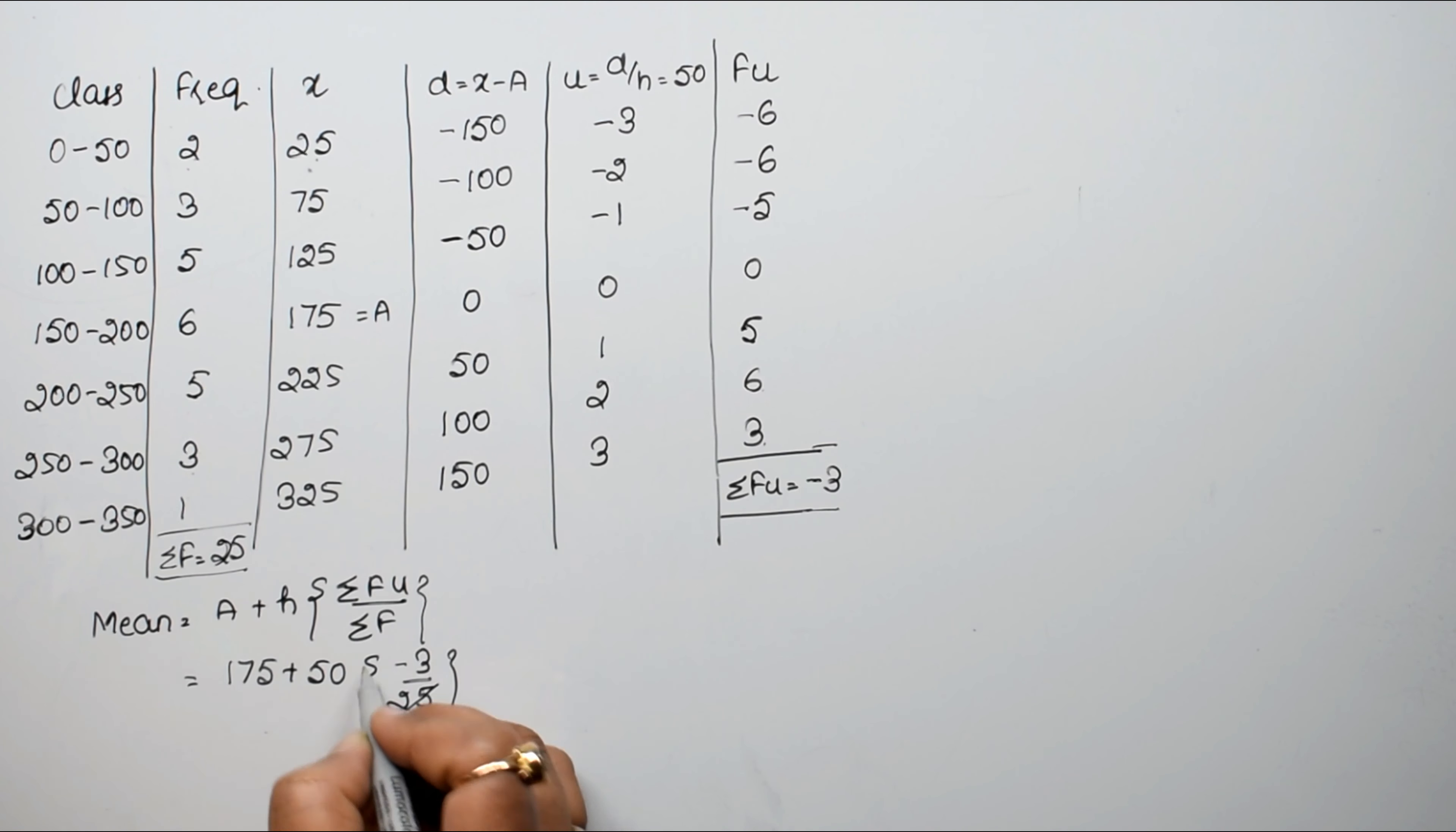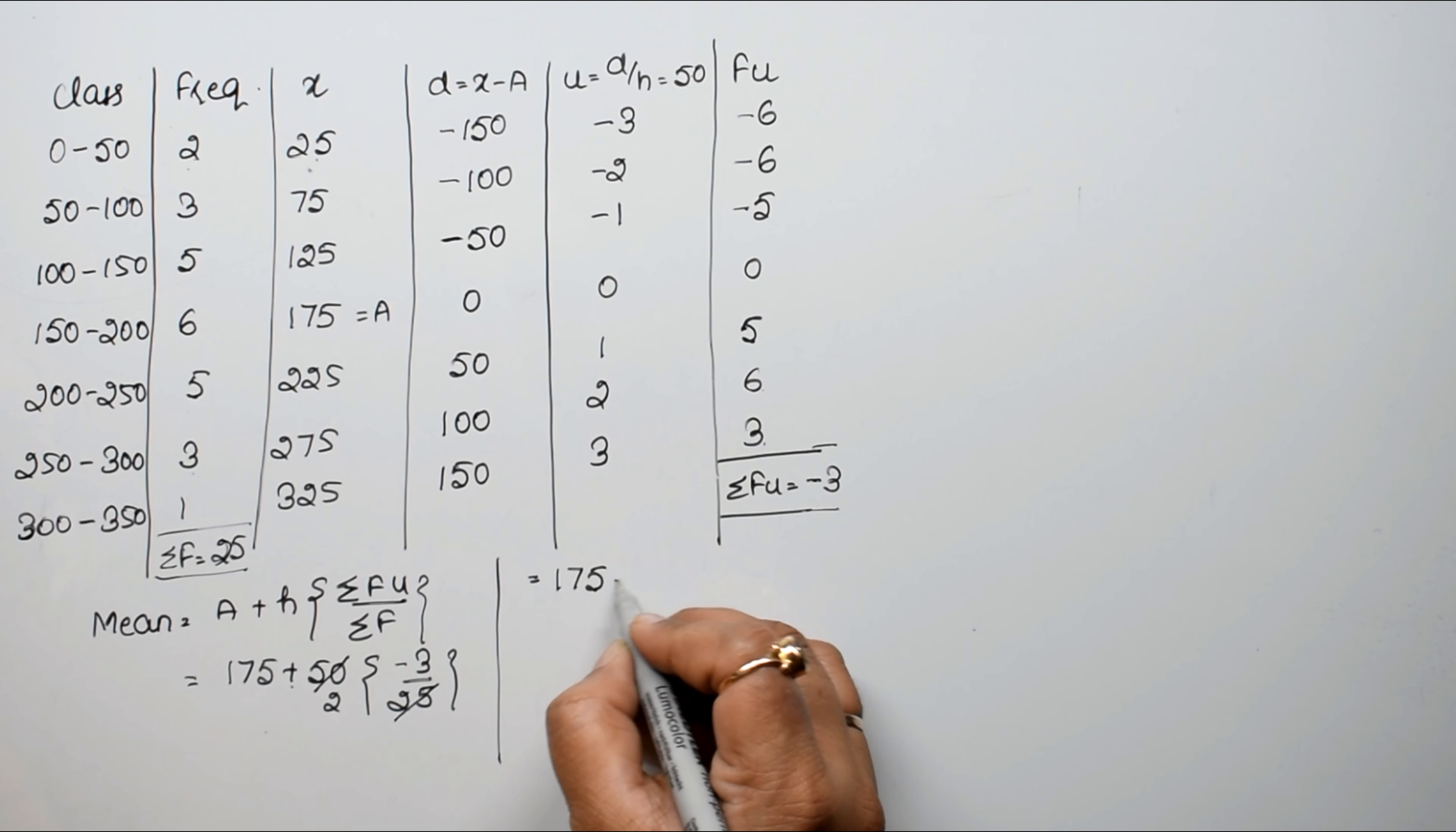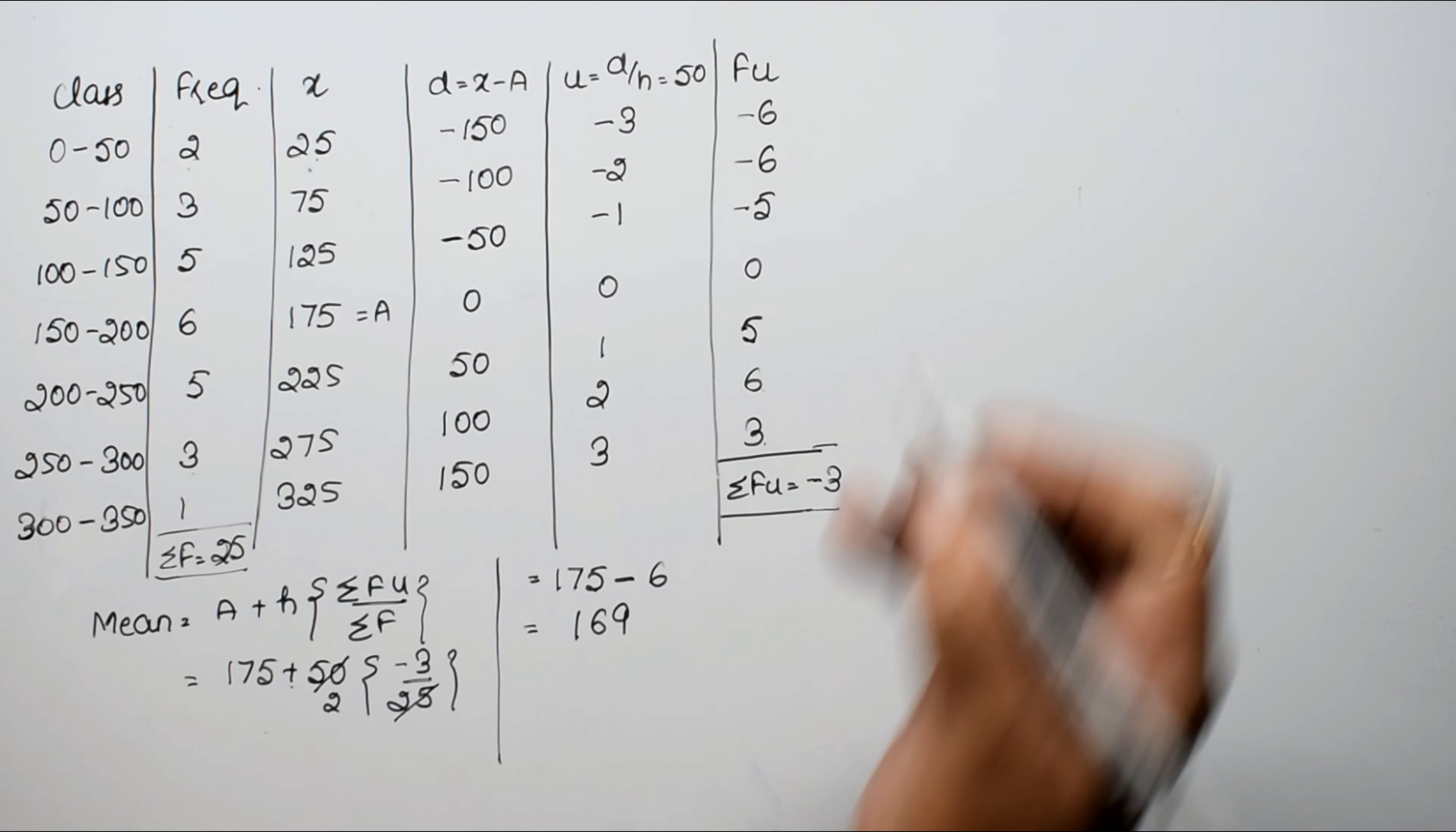And f is our 25. If you see 25 ones are 25, so we can write this as 175 plus minus 2, 3s are 6. So this becomes 169. So our mean is 169.